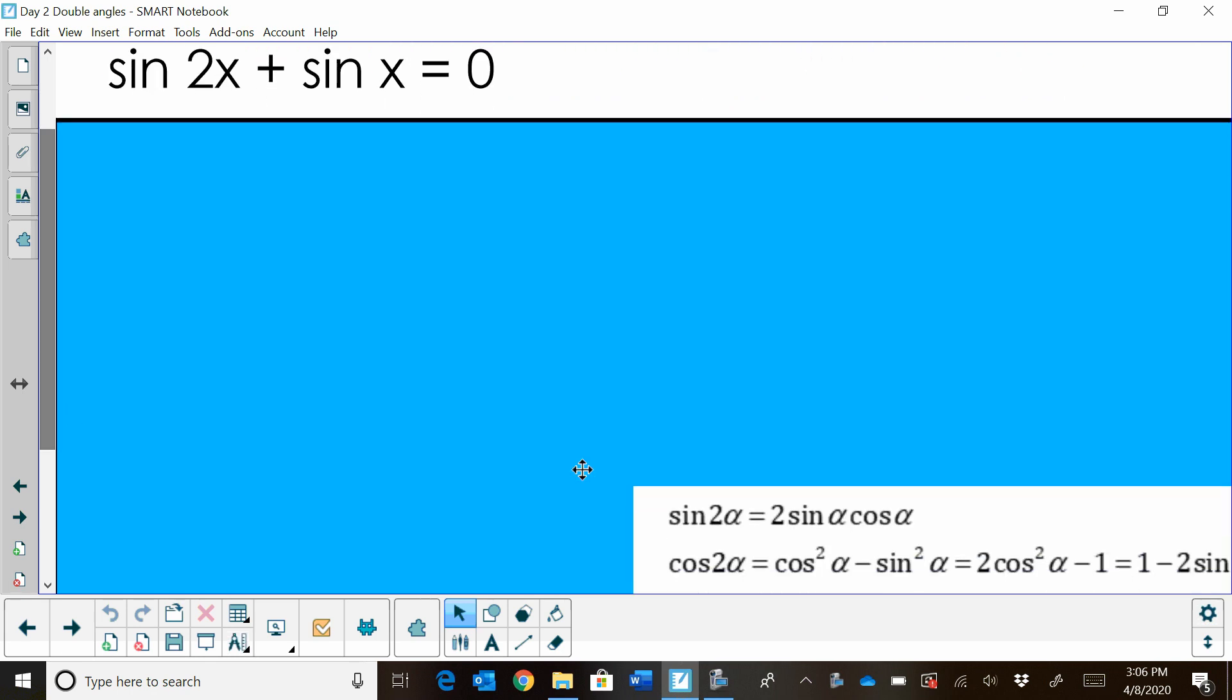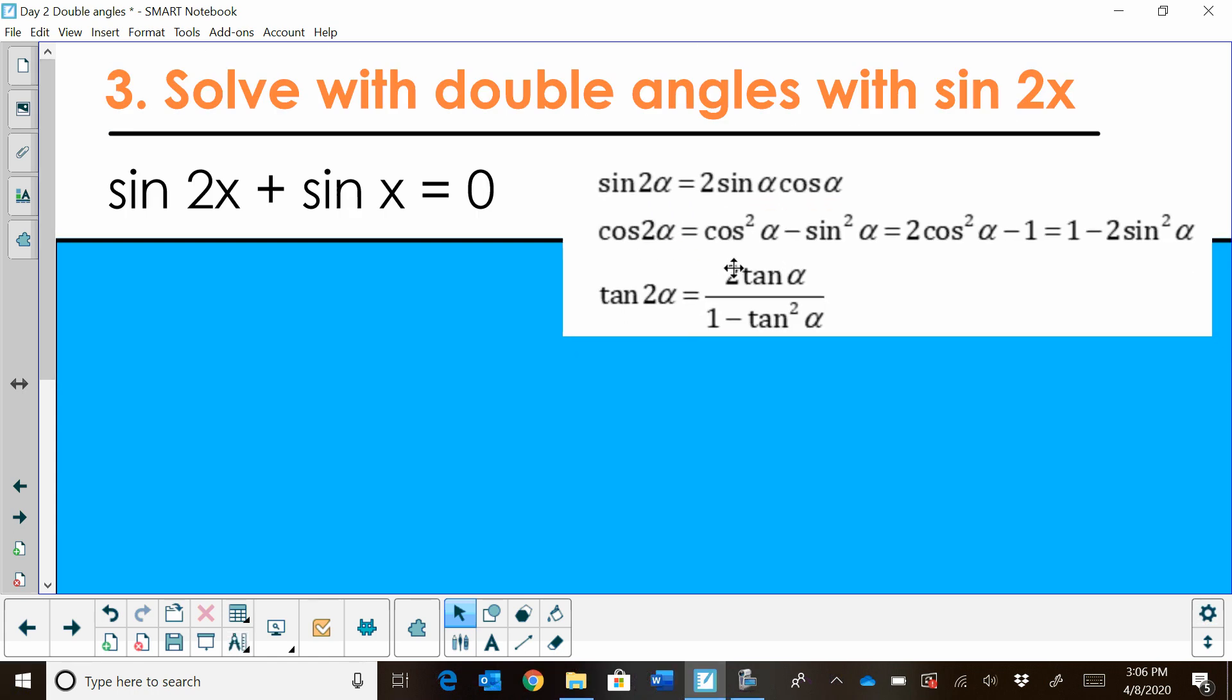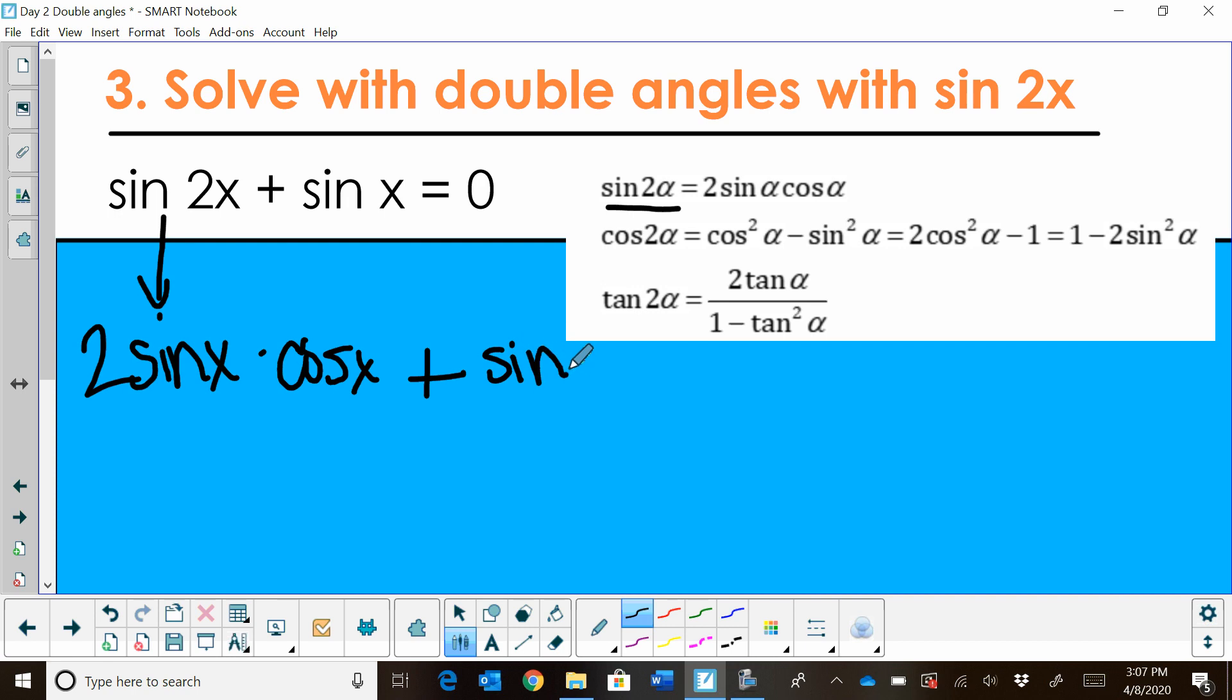So what we've got to do is we have to pull from our knowledge what we know about double angles. So I'm going to pull up here our formulas. A double angle for sine, sine of 2 theta, is equal to 2 sine theta cosine theta. So I can rewrite that double angle as a single angle. So I'm going to substitute in 2 sine x cosine x. So I have 2 sine x times cosine x for my double angle. And then I'm just going to bring down plus sine x equals zero.